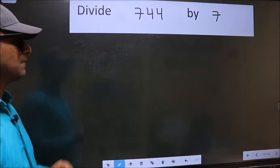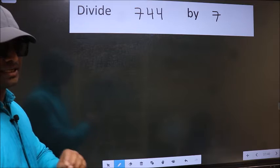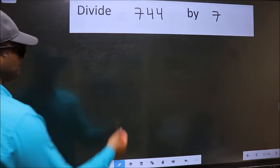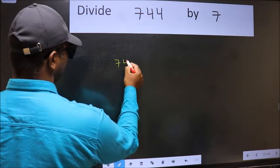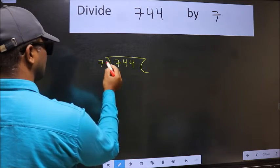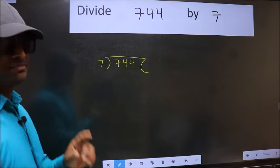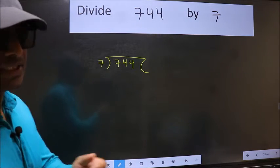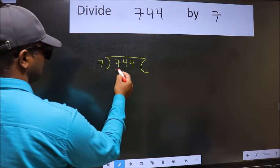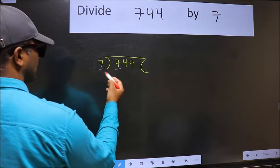Divide 744 by 7. To do this division, we should frame it in this way: 744 here and 7 here. This is your step one. Next, here we have 7 and 7 here. When do we get 7 in the 7 table?